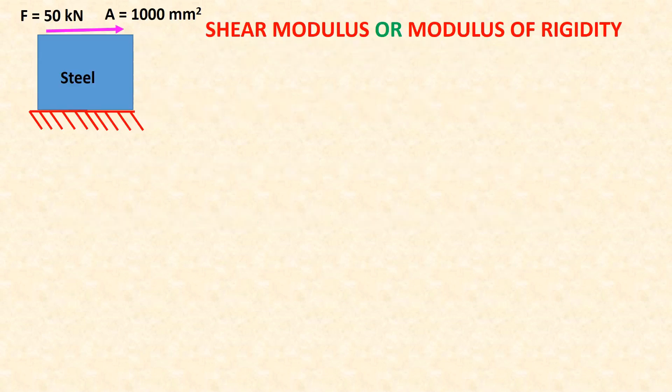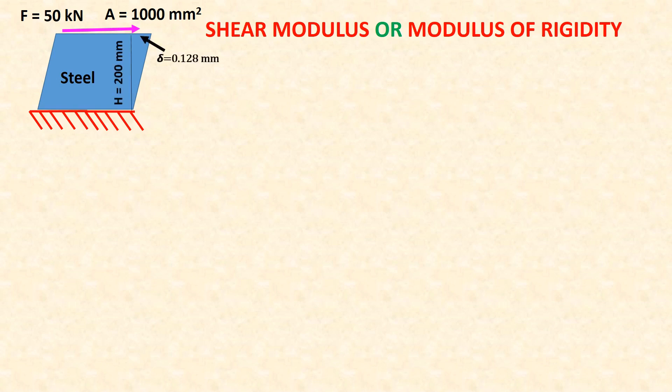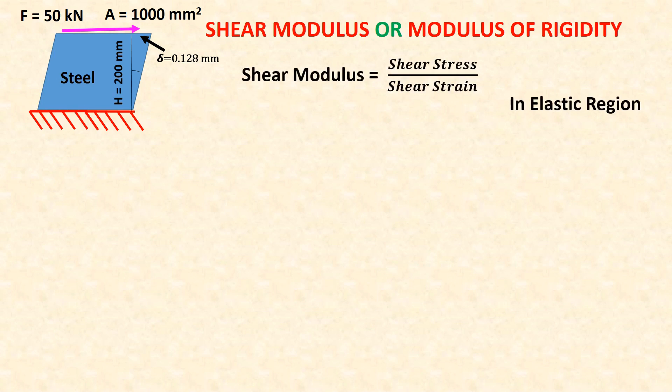Shear modulus, or modulus of rigidity. Shear modulus is equal to shear stress over shear strain in the elastic region. G is equal to tau over gamma.